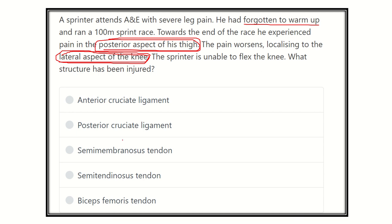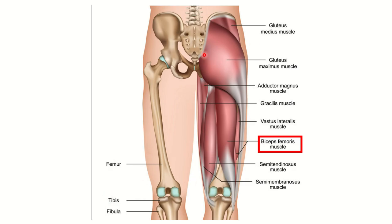The options are: anterior cruciate ligament, posterior cruciate ligament, semimembranosus tendon, semitendinosus tendon, and biceps femoris tendon. The three important posterior thigh muscles are semimembranosus, semitendinosus, and biceps femoris. There is also the adductor magnus, which is part of the posterior thigh muscle group.